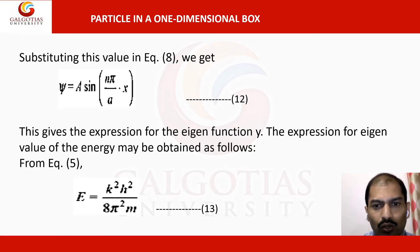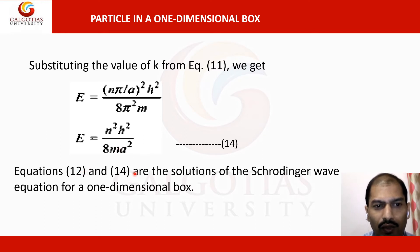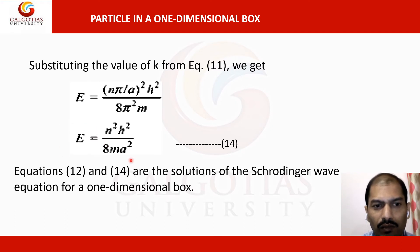Substituting k = nπ/a into E = (k²h²)/(8π²m) gives E = (nπ/a)² · (h²)/(8π²m). Simplifying, this becomes E = n²h²/(8ma²). These expressions — the eigenfunction ψ = A sin(nπx/a) and the energy equation E = n²h²/(8ma²) — are the solutions of the Schrödinger wave equation for the one-dimensional box.